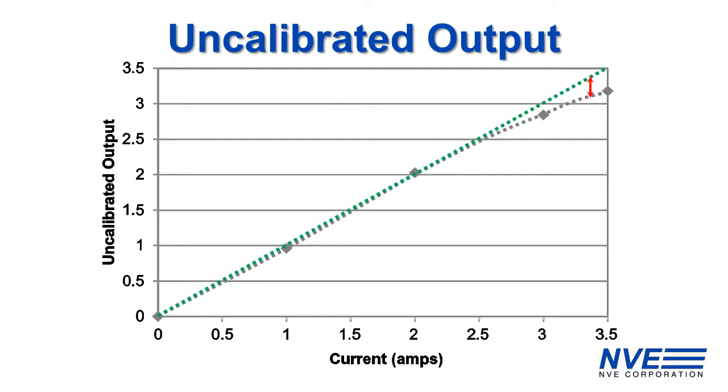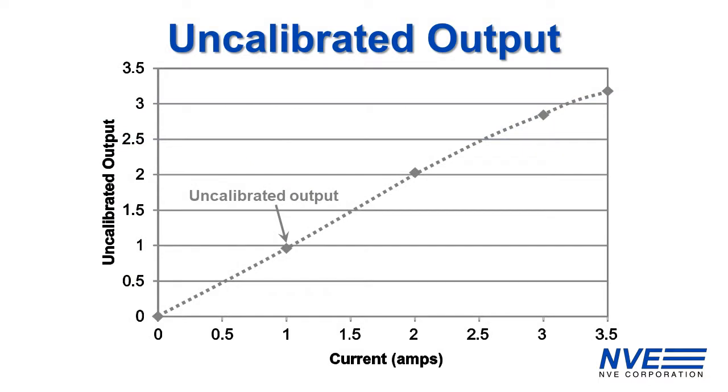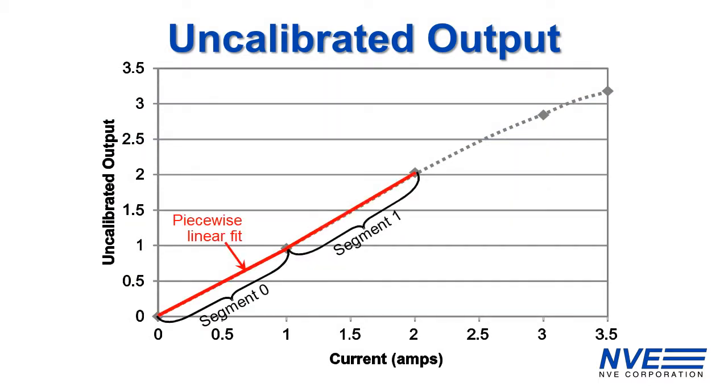The board is factory calibrated for high accuracy, but we'll recalibrate to show the process. We enter the uncalibrated readings into the microcontroller's firmware, which does a four-segment piecewise linear calibration algorithm calculating a slope for each segment.